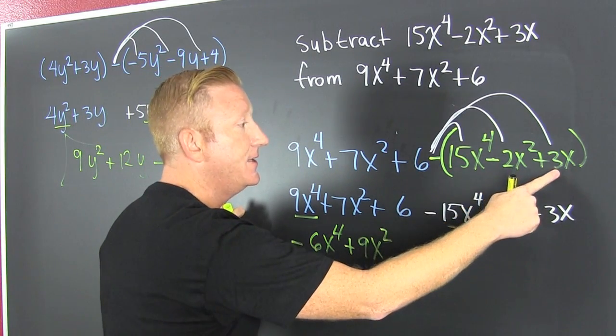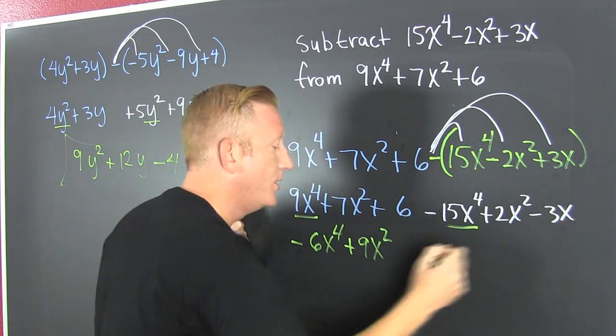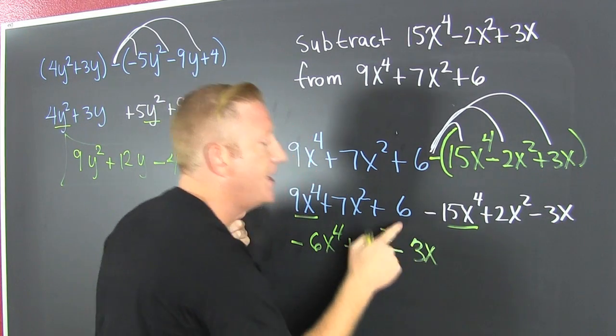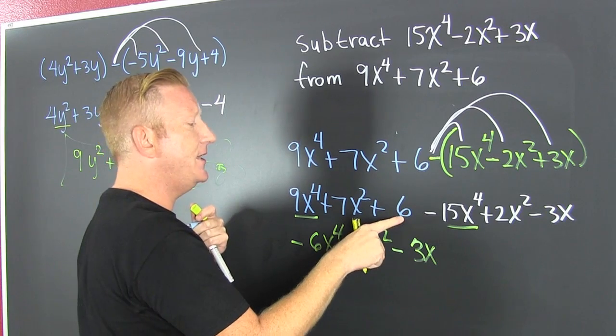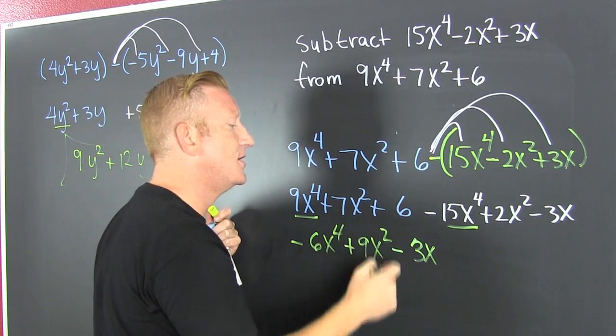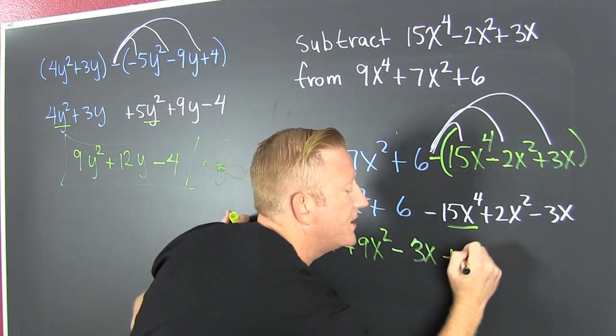Look at that, this guy doesn't have any like terms so we're just gonna bring them down. That's minus 3x, and that doesn't have anything like it either, so then that's plus 6.